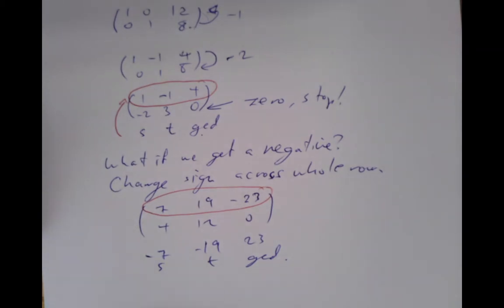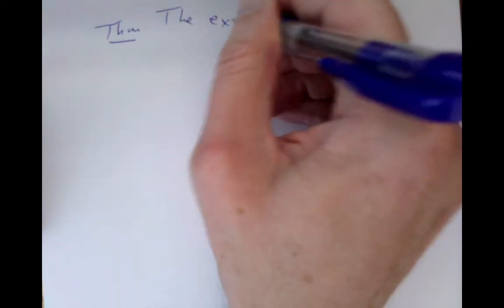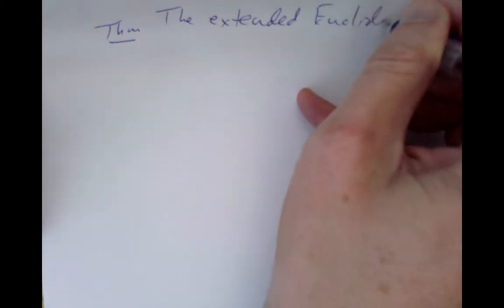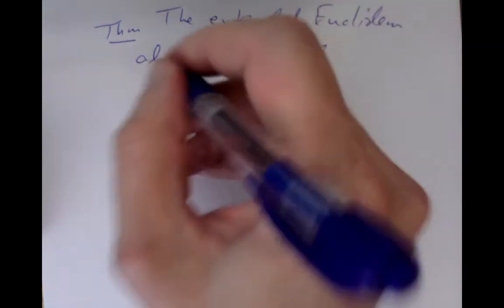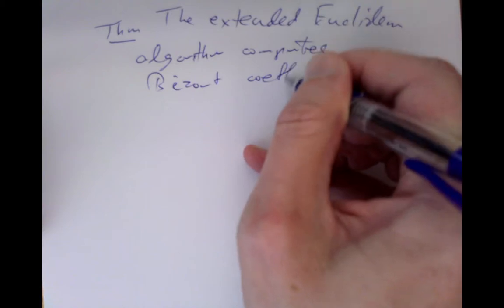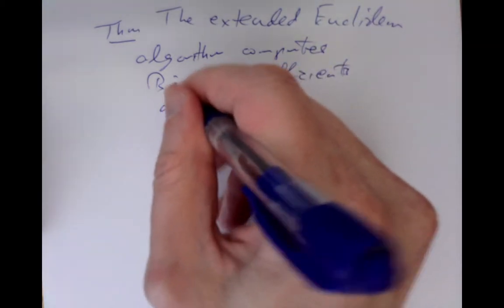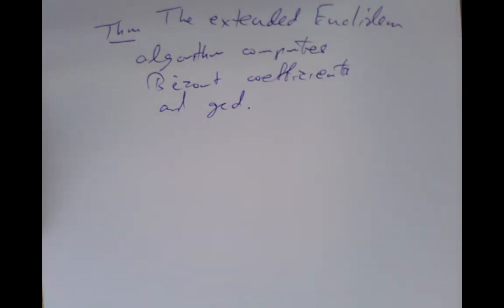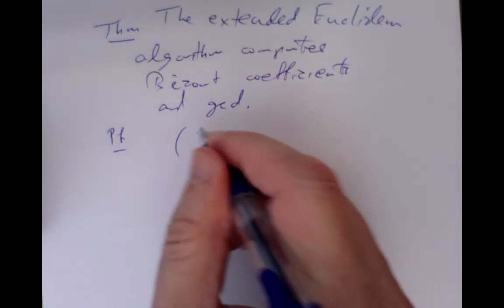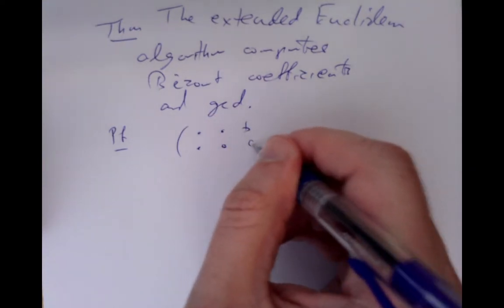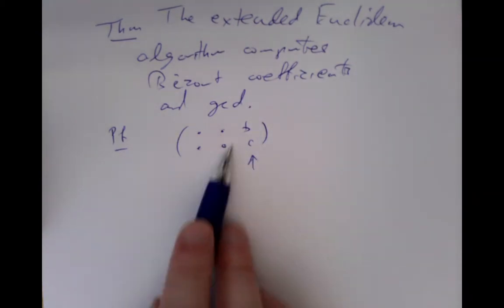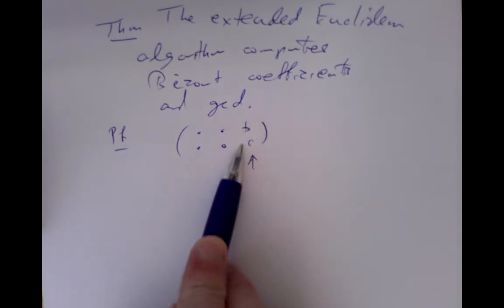But we haven't proven that it works. We need to see why this technique works, and that's going to be very simple linear algebra. So we want a theorem that the extended Euclidean algorithm computes Bezout coefficients and GCD. So why is that true? The first part of the proof is to forget about the entries that started off as the identity matrix, and just think about what's happening in the last column.